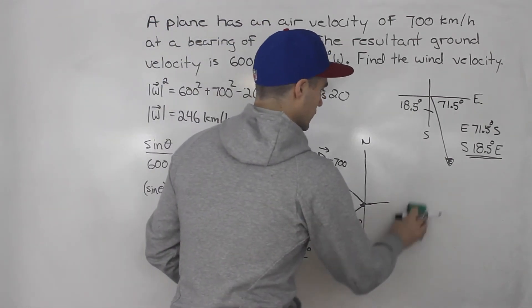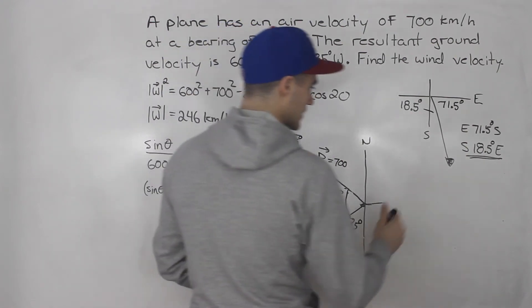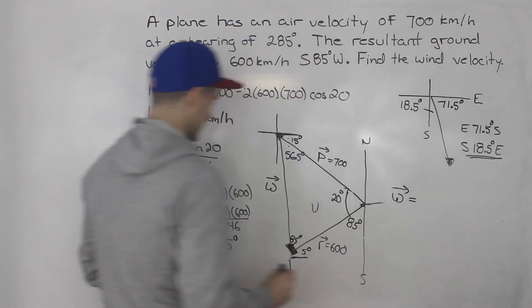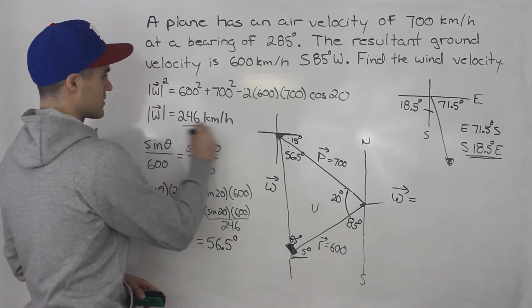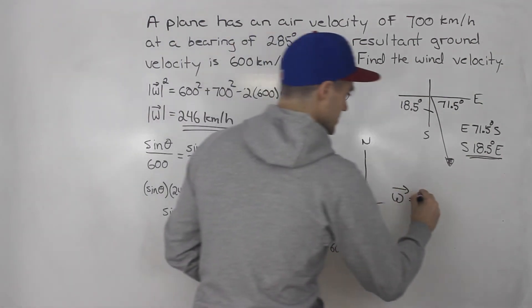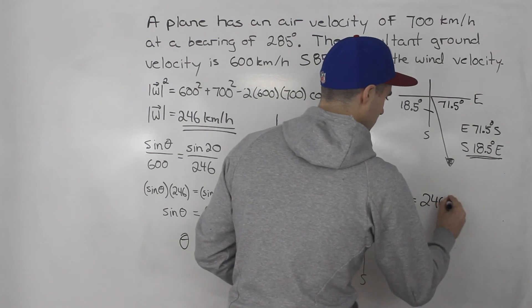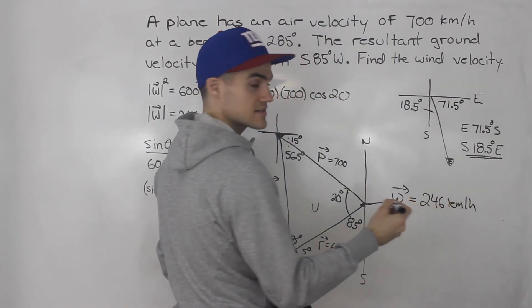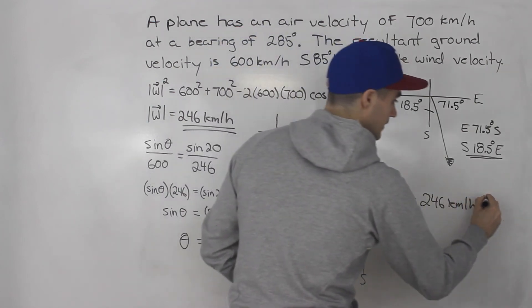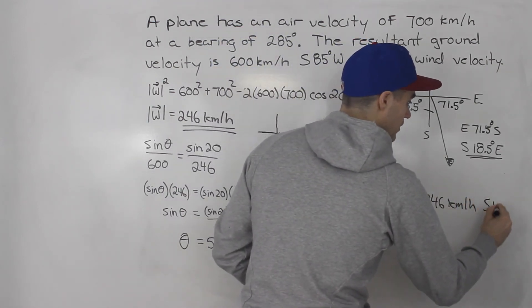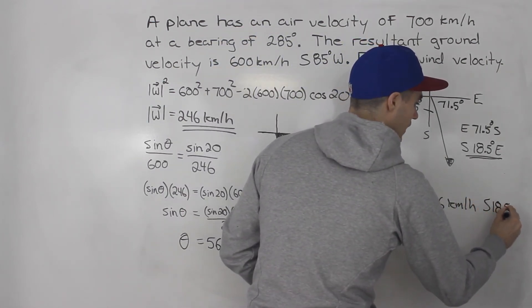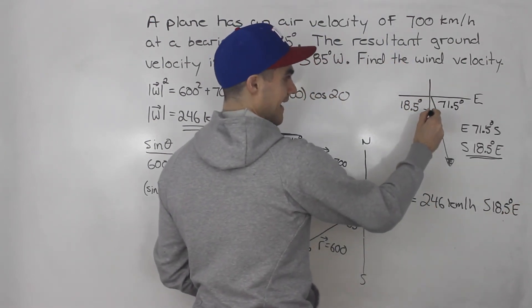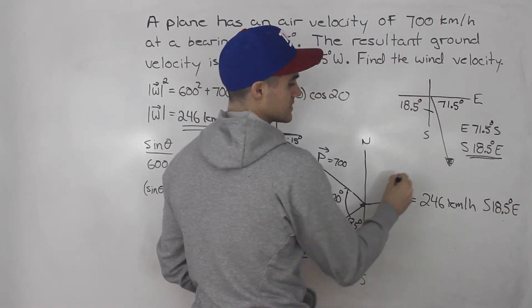Final answer: the wind velocity is 246 kilometers per hour, south 18.5 degrees east.